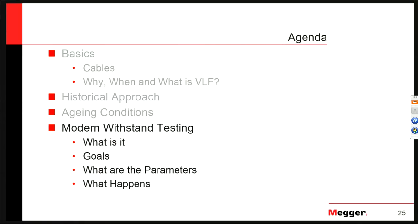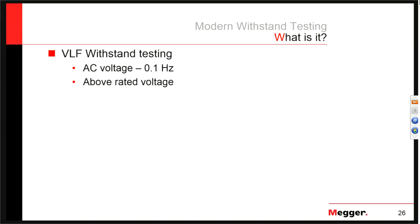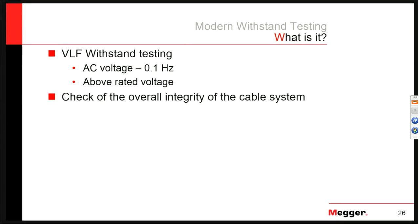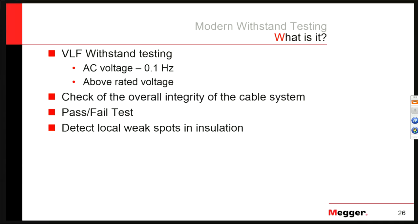When we talk about modern VLF withstand testing, what are the parameters and what is actually happening? VLF testing is AC voltage at 0.1 Hz, at a voltage above rated voltage selected based on IEEE standards — putting pressure on the cable to find weak spots. VLF testing is a check of the overall integrity of the cable system. In its basic form, VLF withstand testing results in a pass-fail test. The goal is to detect local weak spots in the installation by causing existing weak spots to fail during our scheduled test time.